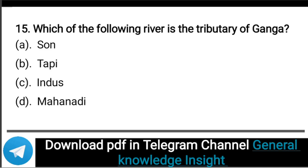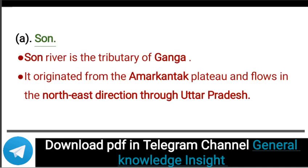Next question: Which of the following rivers is a tributary of the Ganga? The correct answer is option A, that is Son. The Son River is a tributary of the Ganga. It originates from the Amarkantak plateau and flows in the northeast direction through Uttar Pradesh.